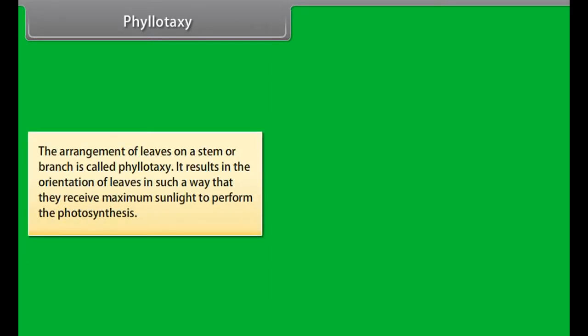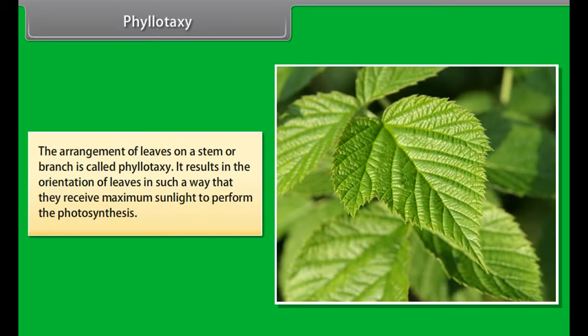Simple leaf: A leaf is said to be simple when its lamina is entire or is incised, but the incision does not reach the midrib in pinnate leaf or does not reach up to the tip of petiole in palmate leaf.